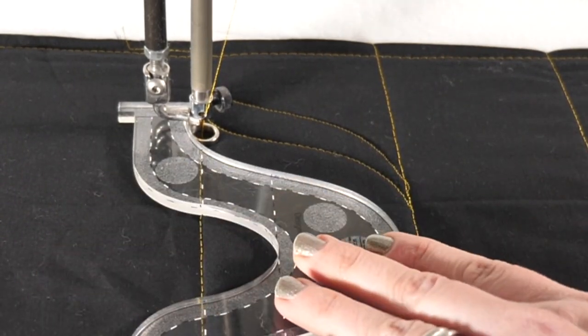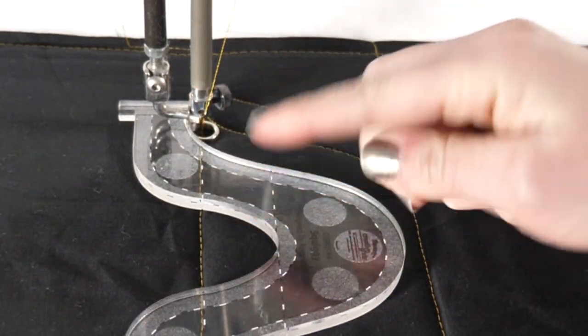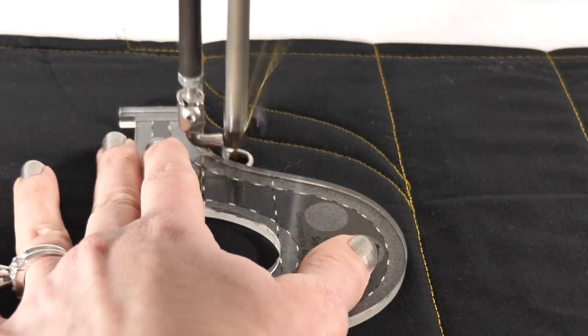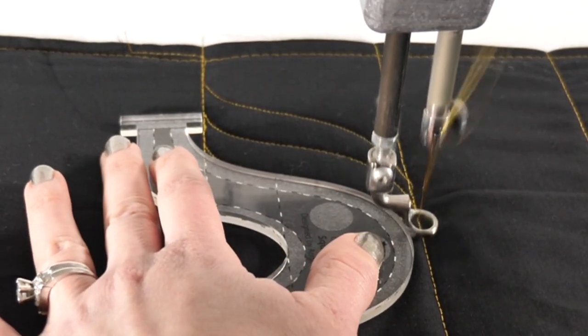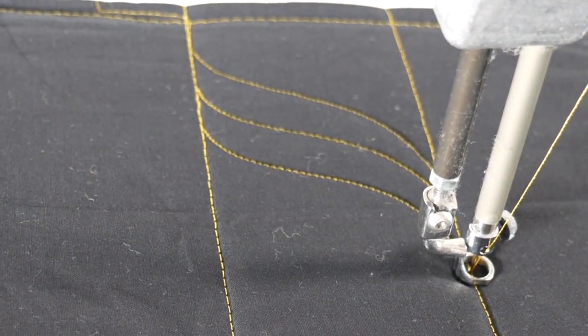And let's do one more. Again, I'm using the reference points on my ruler to help make sure that this ruler is straight to the seam. And then quilting along the outside to that line. There you can see I have my first few serpentine lines.